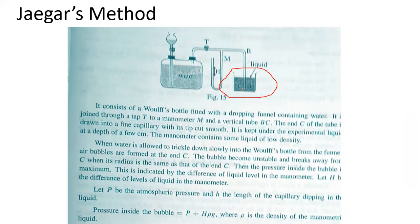So the pressure inside the bubble is maximum. This is indicated by the difference of liquid level in the manometer. Let H be the difference of the level of the liquid in the manometer.